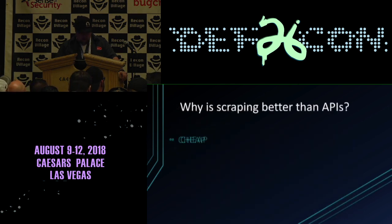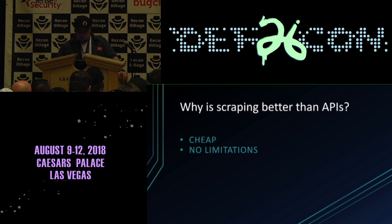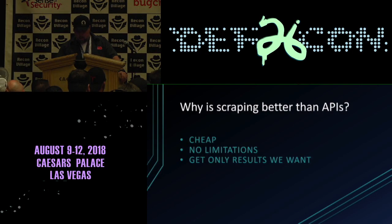Why is scraping better than APIs? First, it's cheap. You don't have to pay a monthly or yearly fee for a set number of search queries. There's no limitations — you don't hit that top level where you have, say, 10,000 search queries and if you burn through them in a month, you don't have to keep upgrading. And most of it's getting the results that we want — if a site doesn't have an API, we can basically scrape the page, pull all the information off it, and display it as we need.